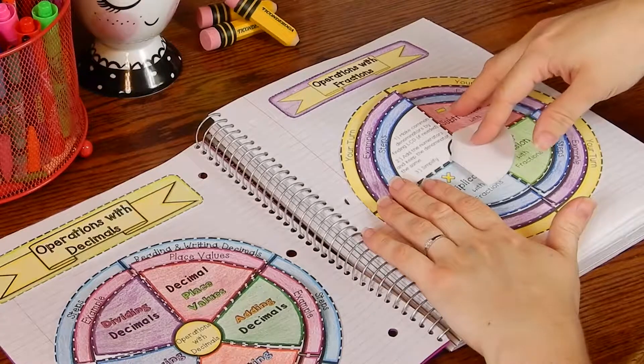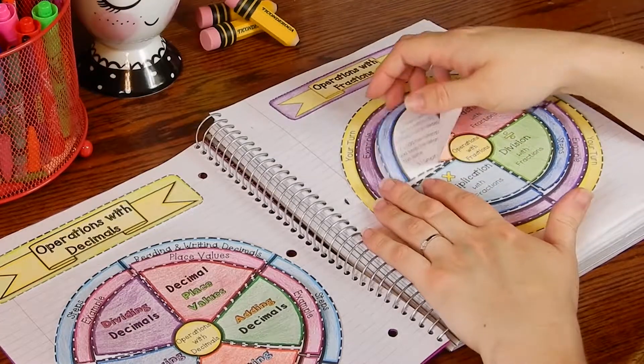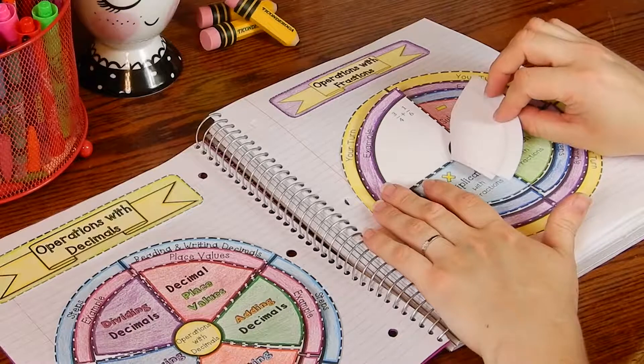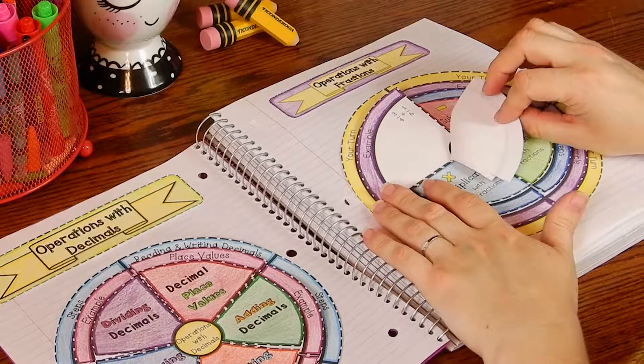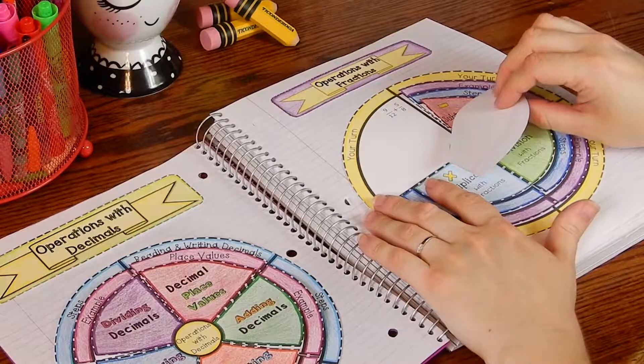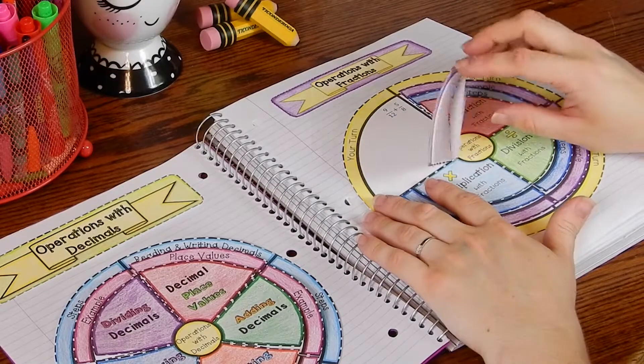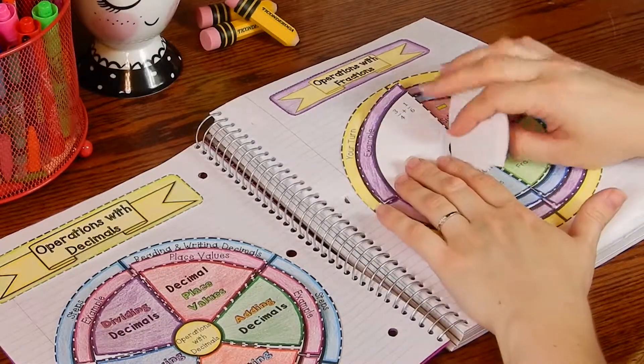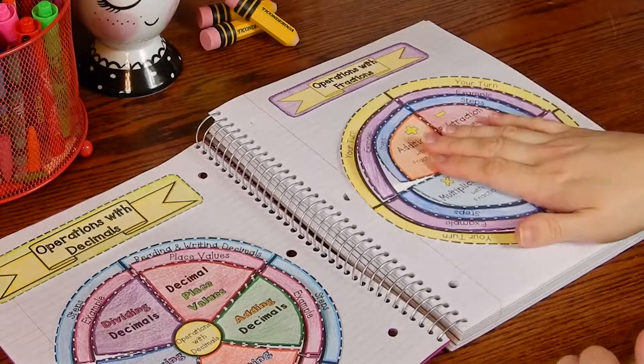Again, you can have it printed or you can have students fill it in, and then there is an example. I like to go over an example with my students, and then the bottom layer is 'your turn.' Then I have students go ahead and solve that problem using the knowledge that they learned from the example we just previously did.